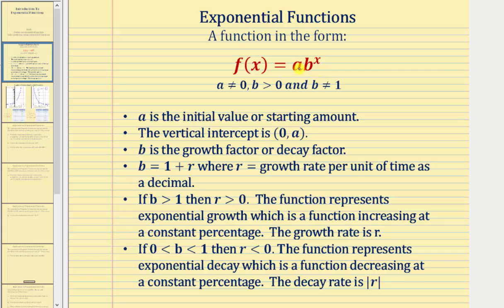The value of a is called the initial value, or starting value, which is the function value when the input x is equal to zero. Therefore, a also gives us the vertical intercept, which would be the ordered pair zero comma a.